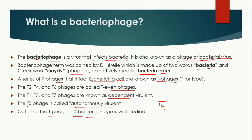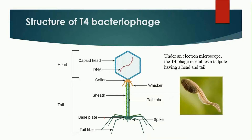Under a microscope, the T4 bacteriophage looks like a tadpole. You can see in the diagram that just like a tadpole, it has a head and a tail. Generally, the bacteriophage structure is divided into two major parts: the head region and the tail region.